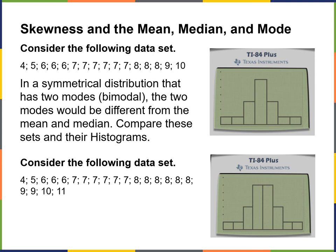Now let's look at this data set. In a symmetrical dataset that has two modes — bimodal — the two modes would be different from the mean and median. Comparing these sets: the first one is symmetrical, the second one is bimodal. You can see there are a significant number of both sevens and eights — looks like six sevens and six eights. That's a bimodal distribution — it's still symmetrical, but bimodal because there are two modes.